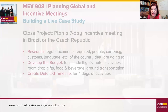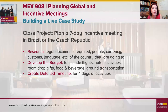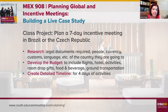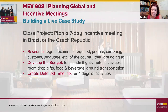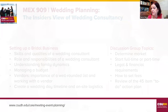Then the fun begins: you'll be broken into groups to plan a seven-day incentive meeting in Brazil or the Czech Republic. You'll do your research, develop the budget — including flights, hotels, activities, room drop gifts, food and beverage, and ground transportation — create a detailed timeline for four days of activities in the local area, and then present your event to the class.